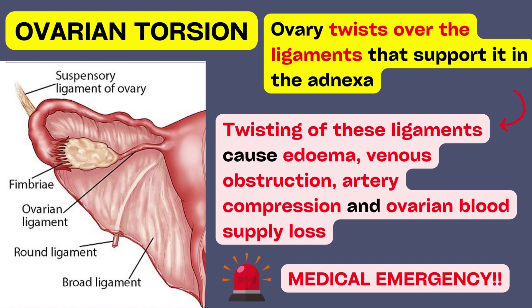Twisting of these ligaments can cause edema, venous obstruction, artery compression, and ultimately ovarian blood supply loss. When the blood flow is disrupted, this can result in a variety of symptoms, including extreme pain.